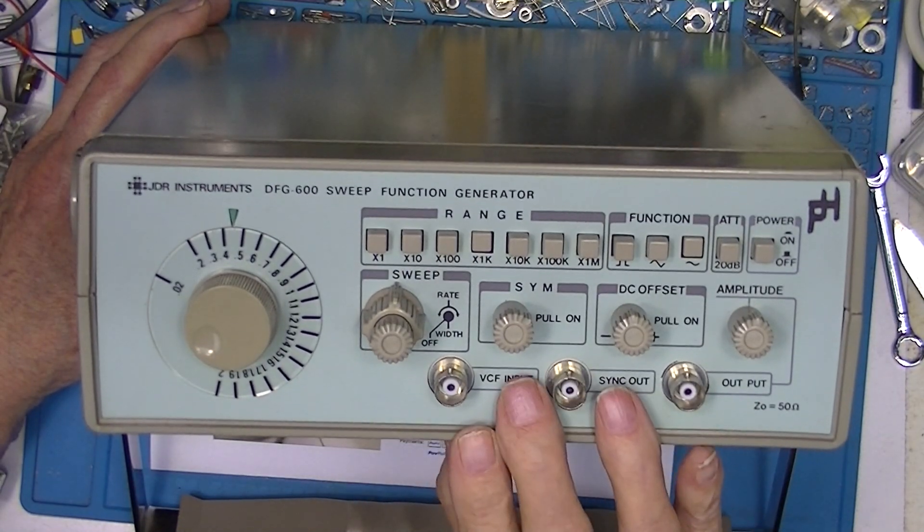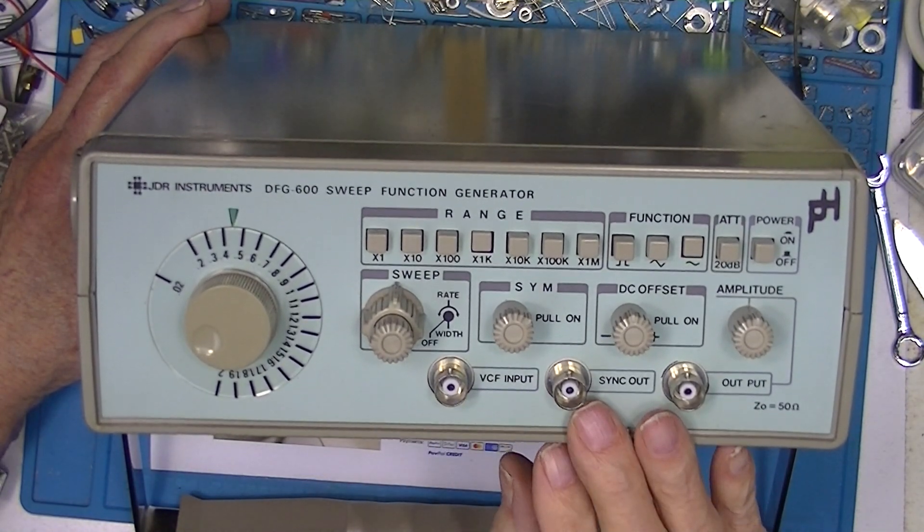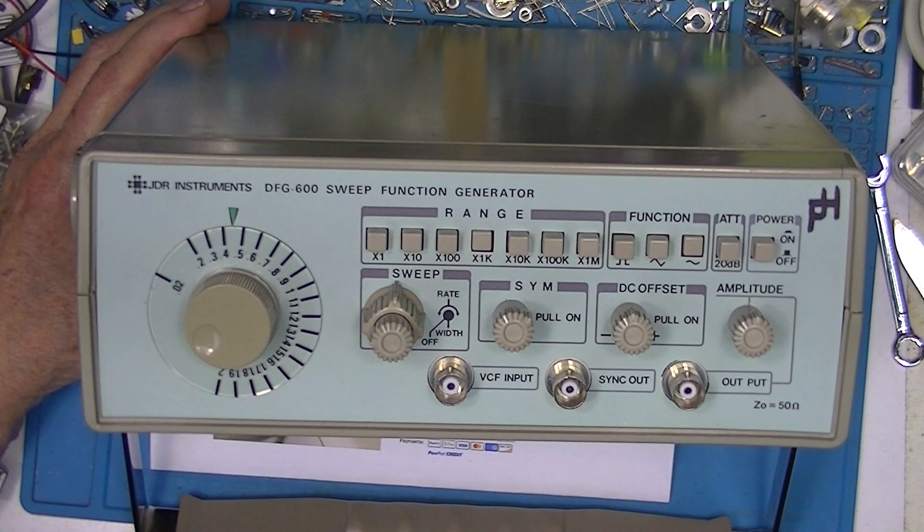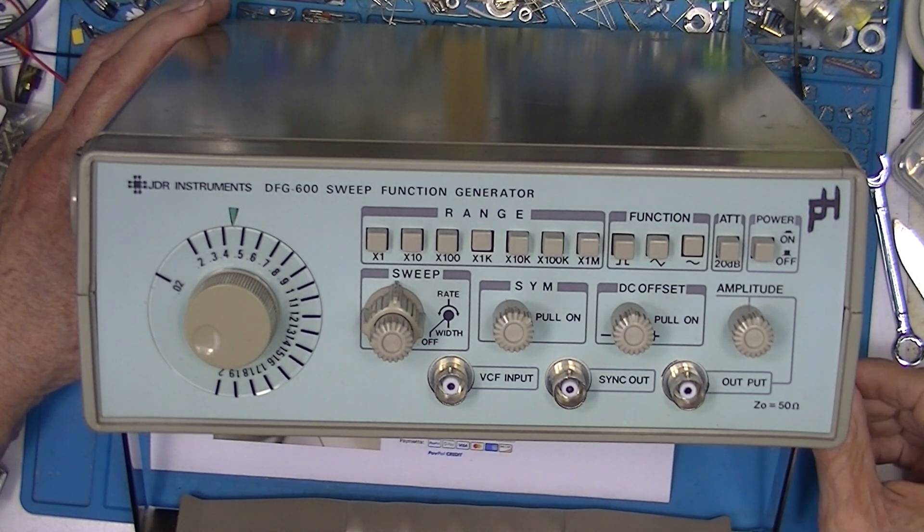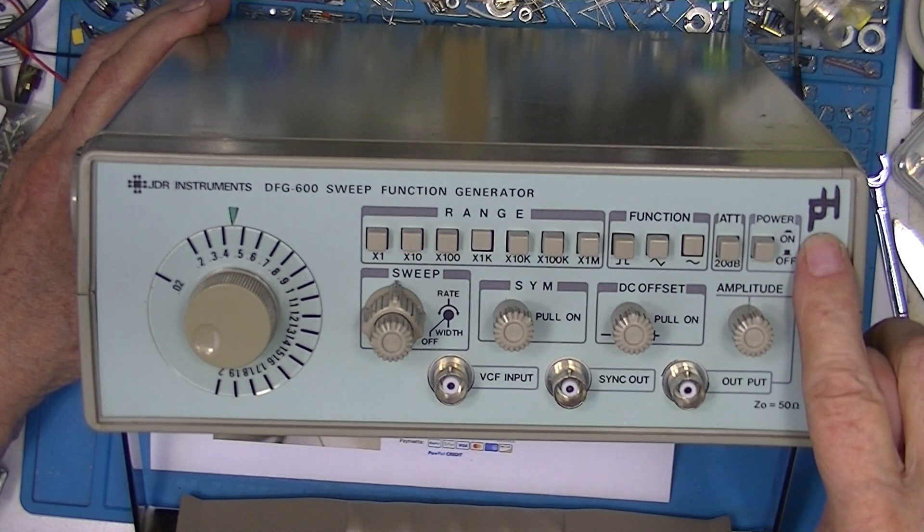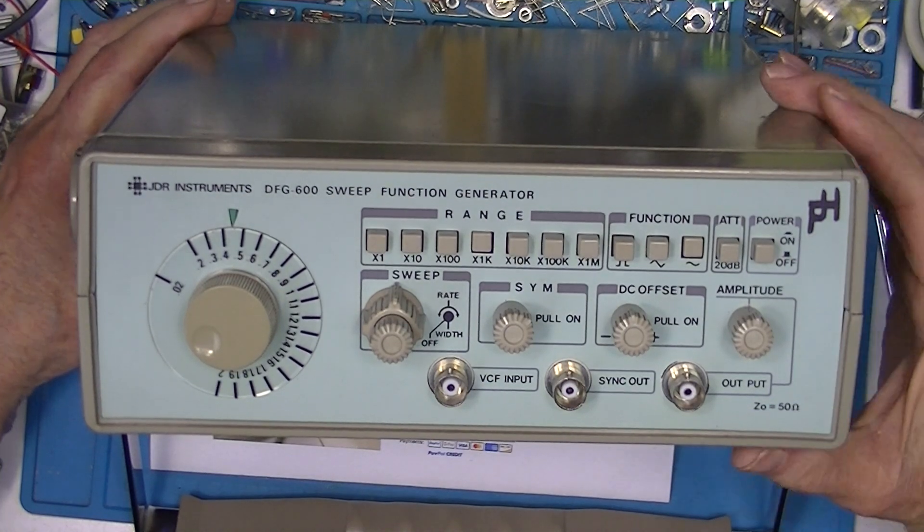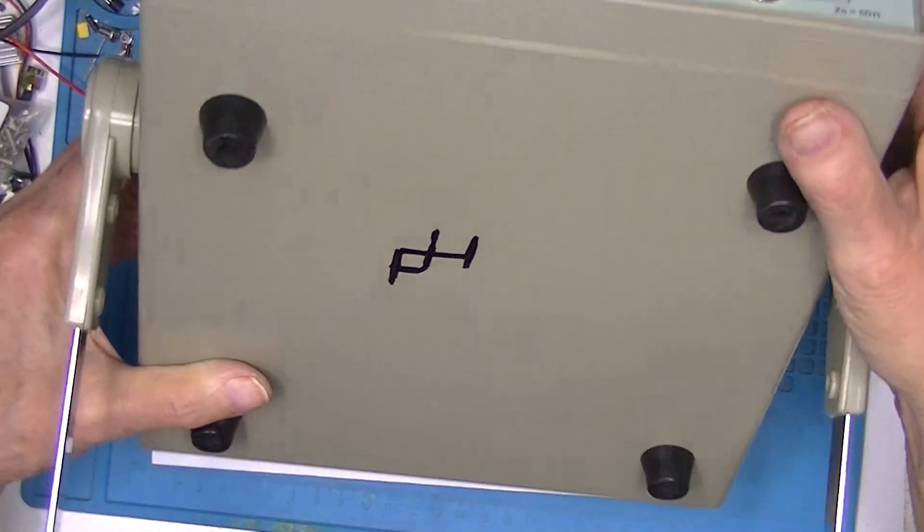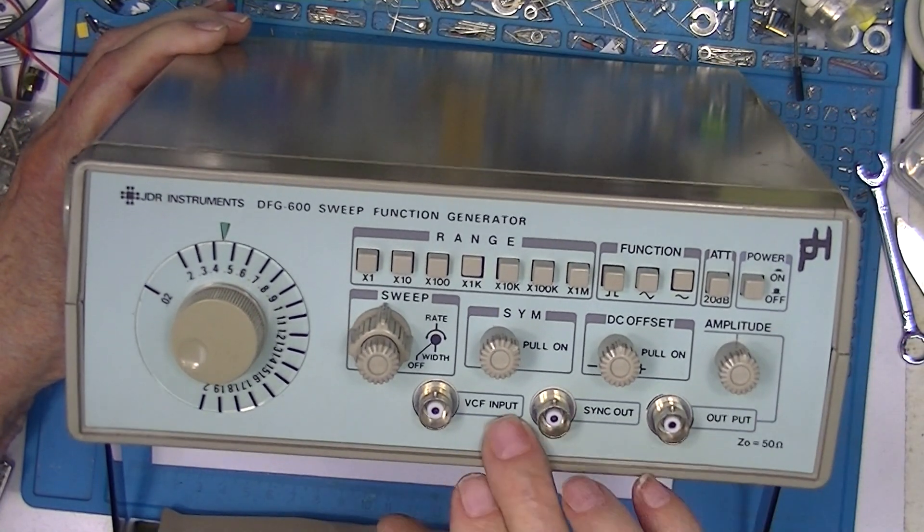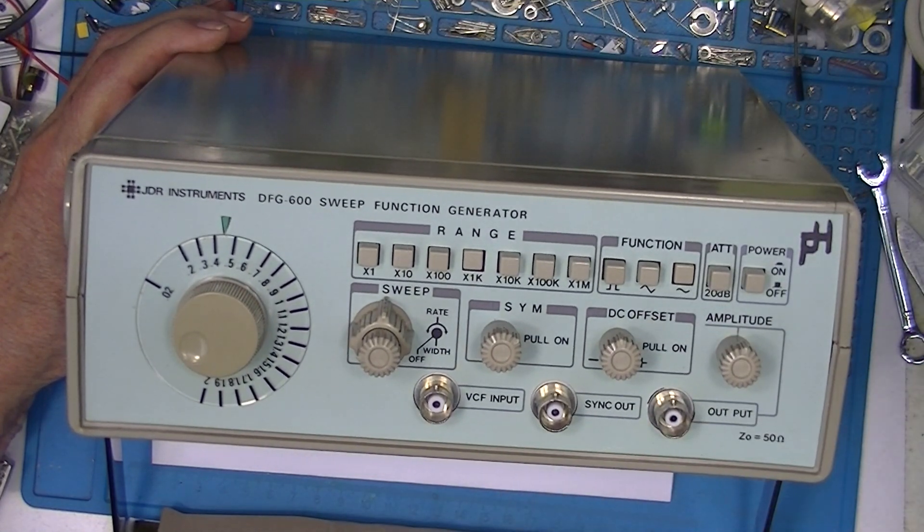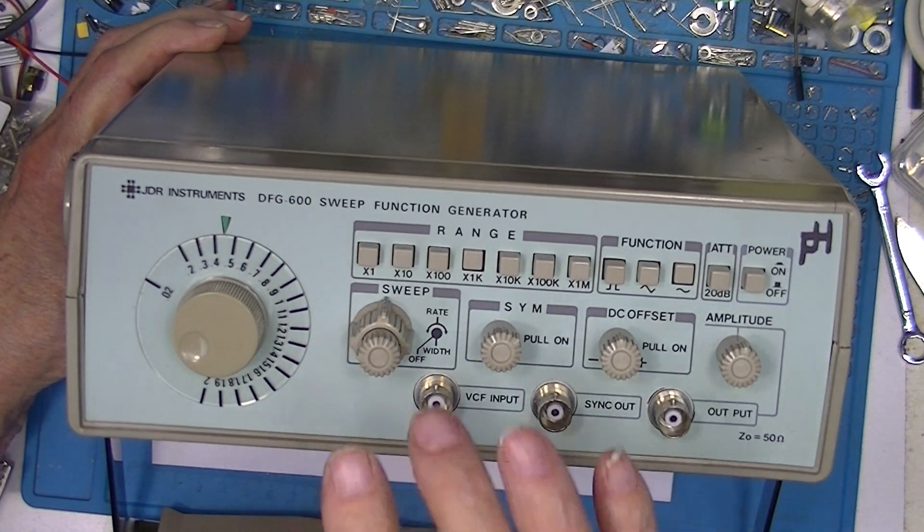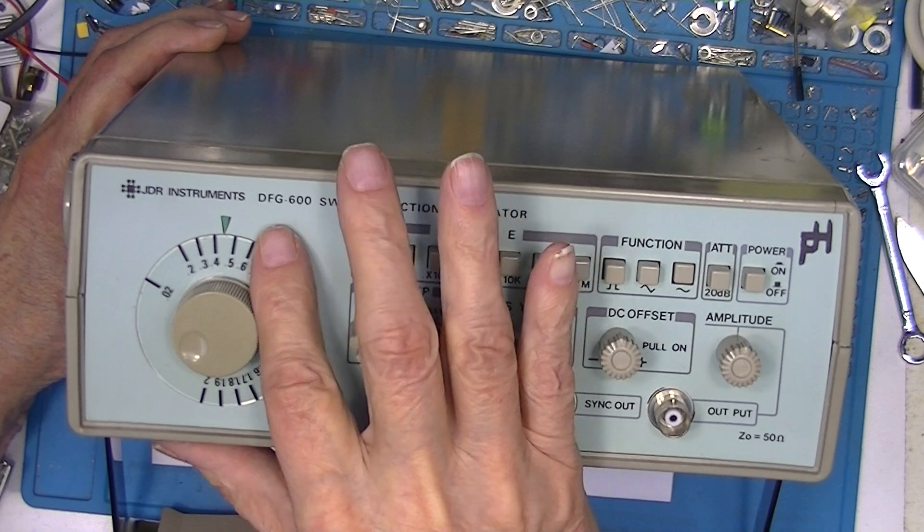So this just came in the mail today. I didn't bother showing the opening on video. I bought it on eBay from a guy who said he was selling it for a friend that was 80 some years old. I take his name was P and H maybe, because that appears here and appears in the bottom of the case. I have one of these already.